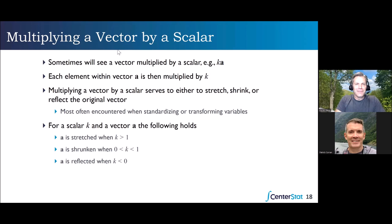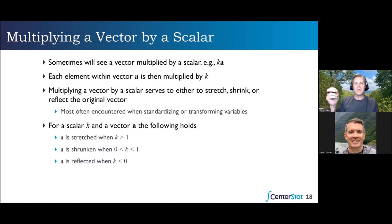Dan is going to explain scalar multiplication geometrically. Earlier Patrick said that part of the reason we call single numbers 'scalars' is because they can serve to scale a vector — they can shrink it, stretch it, or reflect it. We take a vector and multiply it by a scalar.